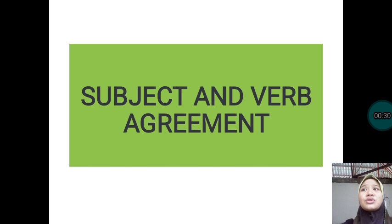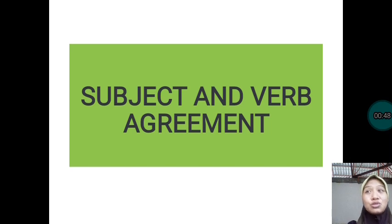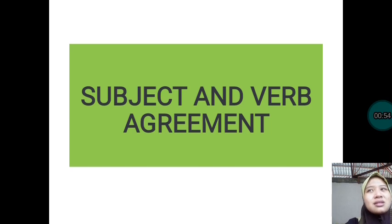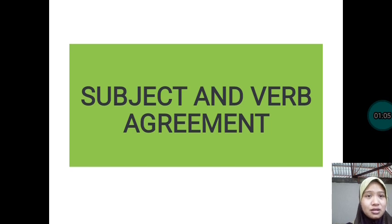I know that you are already familiar with this topic, but for now let us review and recap it for us to understand it more deeply. This topic is one of the most important things to know because it gives us knowledge on how to speak English grammatically. We know that we can speak English, but we cannot always assure that our grammar is correct. So now we must understand totally what the agreement of the subject and verb in a sentence is. Let's start to tackle this.